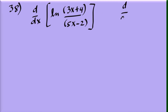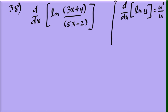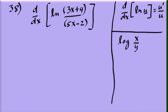This expression inside is a quotient, but we don't need the quotient rule. Instead, use the logarithm property: the logarithm of x over y equals the logarithm of x minus the logarithm of y.